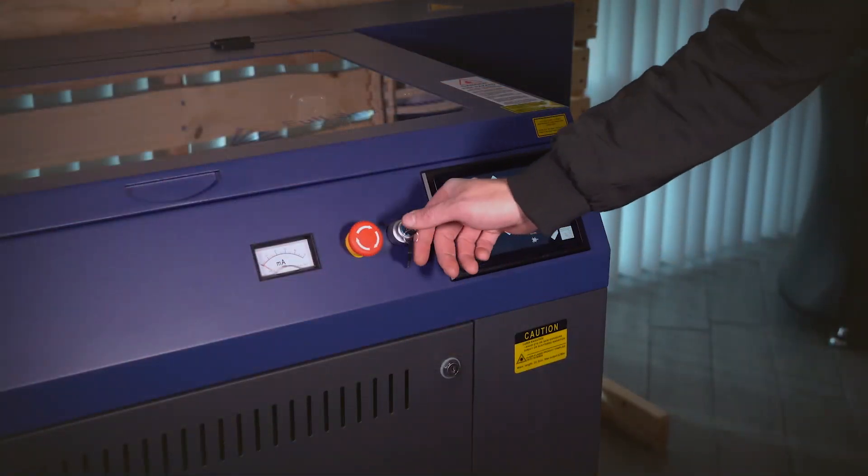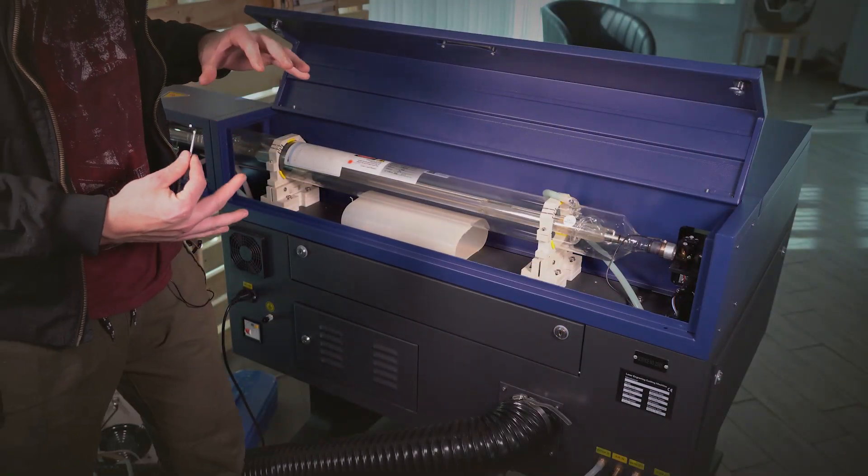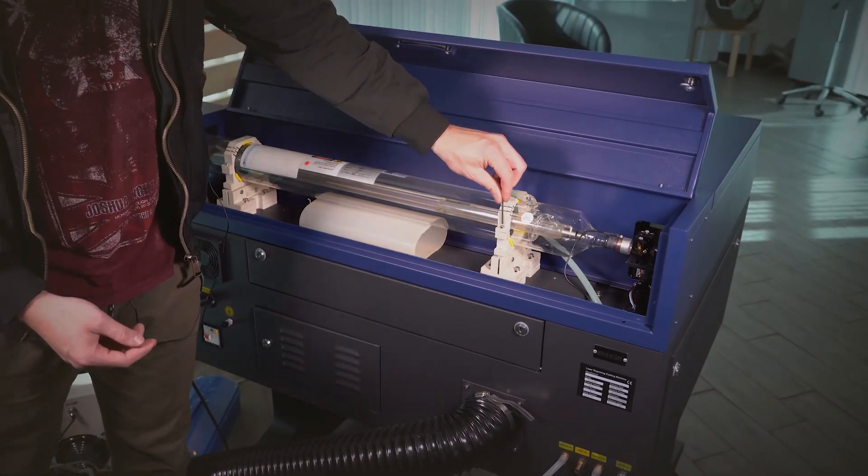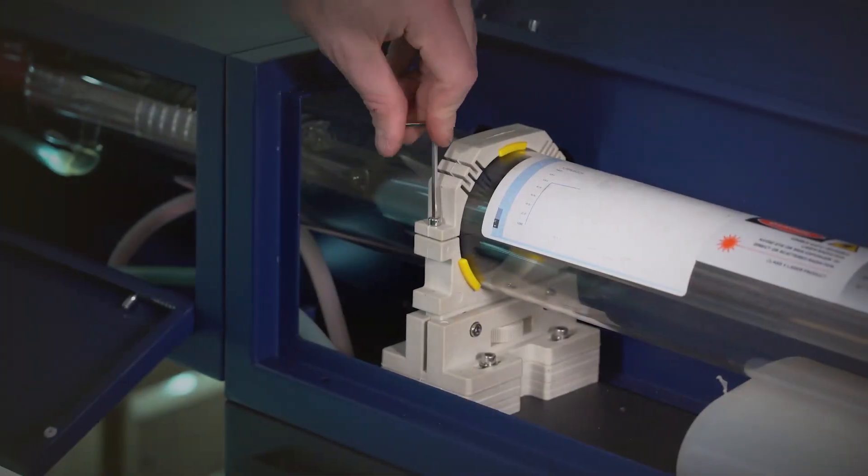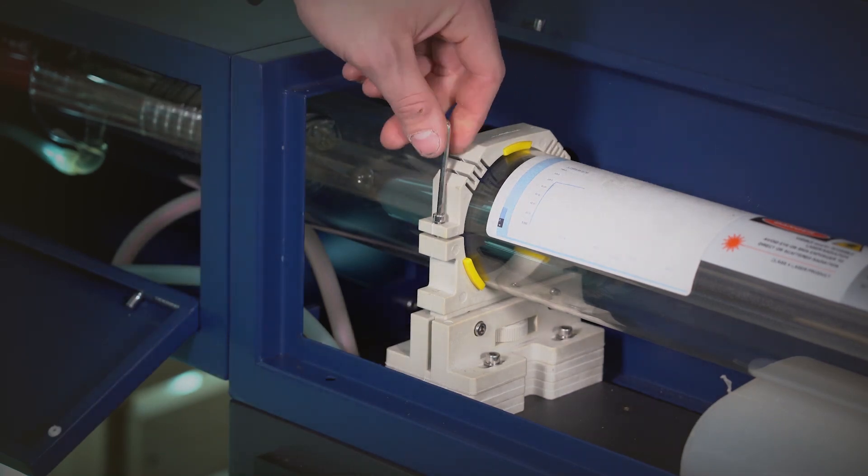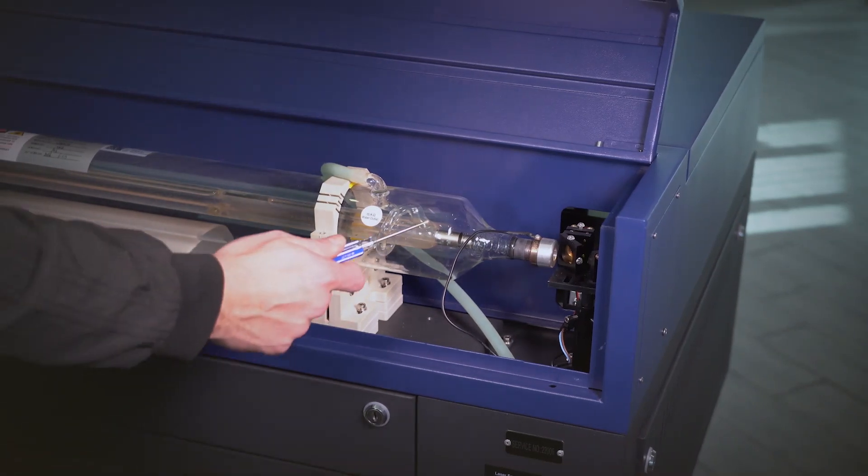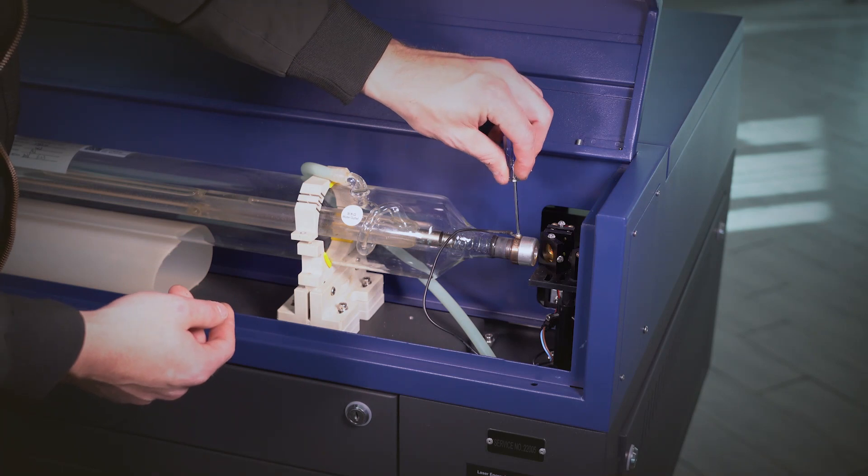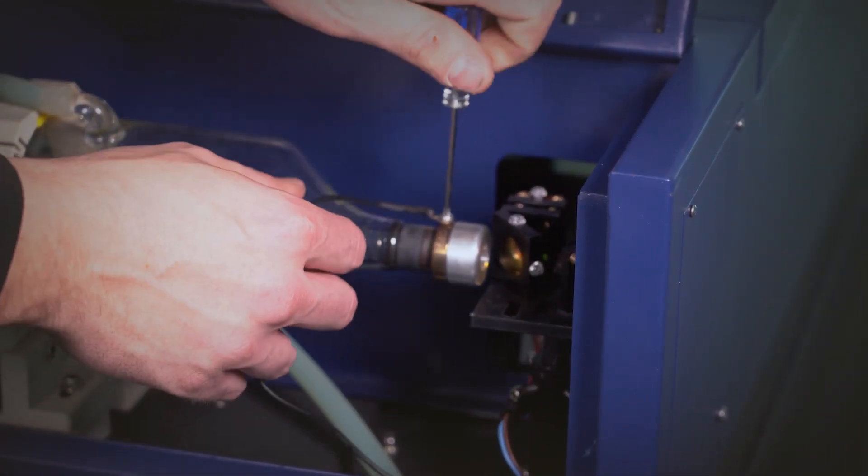First you want to shut off your machine. After waiting an hour you'll want to remove the two hex bolts with an Allen key and now while we're on this side we're going to use a Phillips screwdriver and remove the negative side on the tube.